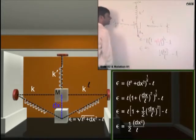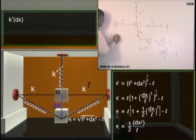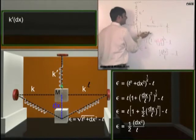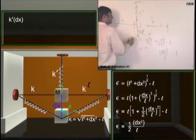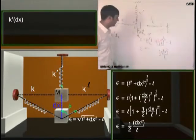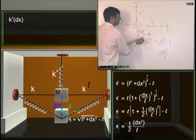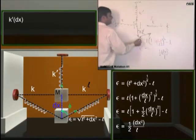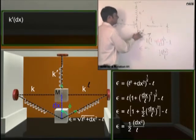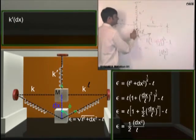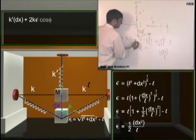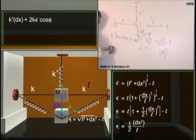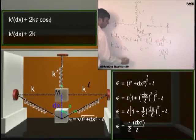So now please understand one thing. The force due to this spring, please pay attention. The force due to this spring will be k' into dx upwards. Am I right? Force due to this spring, the component of this force in this direction, will be - if suppose this is phi. So the component will be k times epsilon times cos phi. Cos phi from this triangle can be written as this upon this. Am I right? So k' dx plus 2k times epsilon into cos phi.